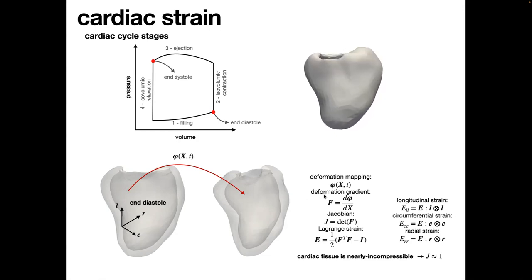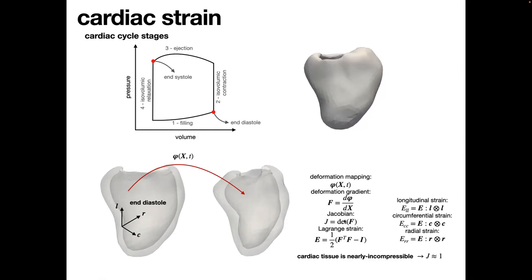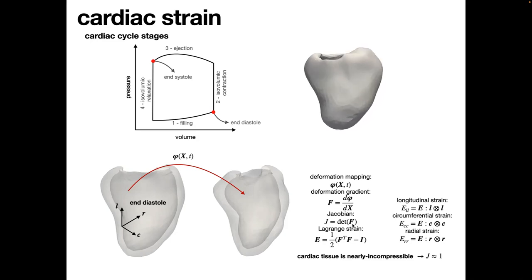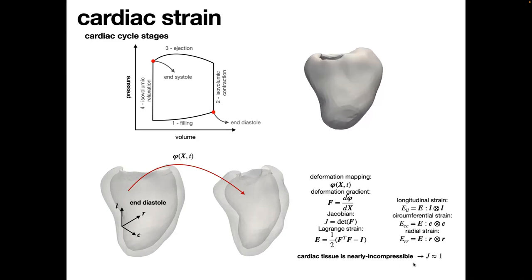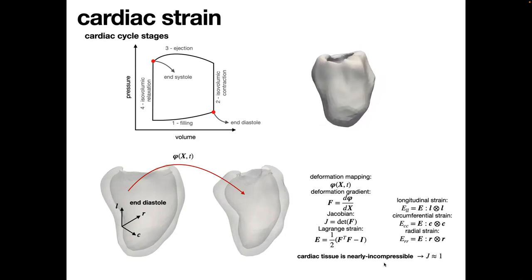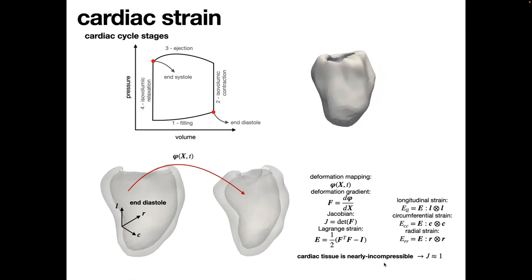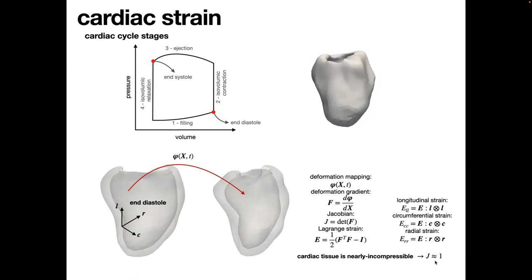In the reference configuration, we define a local coordinate system: longitudinal, radial (across the myocardium thickness), and circumferential coordinates. From the deformation mapping, we compute the deformation gradient, and the Jacobian — which represents local volume changes. We then define the Lagrange strain and project it to get longitudinal, circumferential, and radial strains. A key fact we use is that cardiac tissue is nearly incompressible: the Jacobian must remain close to one.